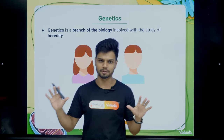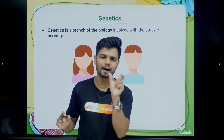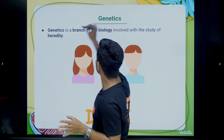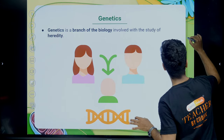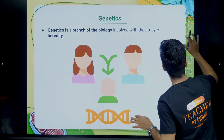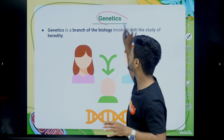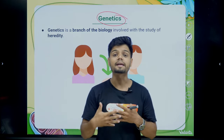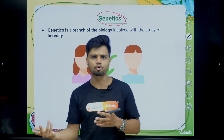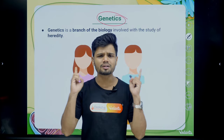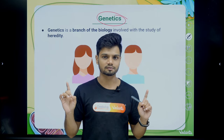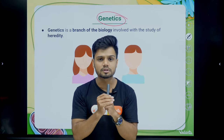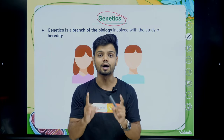Before you understand the chapter, there are a few basic requirements — the terminologies. Without understanding the basic terminologies, this chapter becomes very difficult to understand. For example, what is the meaning of genetics, heredity, inheritance, chromosomes? So before understanding all these terminologies, the chapter becomes very difficult. We're going to start from the basics. Even if you do not know a single word from this chapter, you should be able to understand it. That is my aim today.